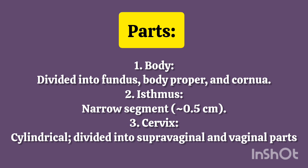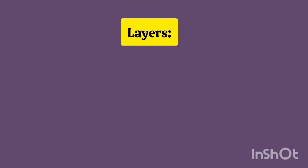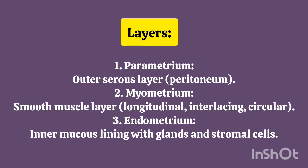Parts: 1. Body – divided into fundus, body proper, and cornua. 2. Isthmus – Narrow Segment – 0.5 cm. 3. Cervix – Cylindrical – Divided into Supravaginal and Vaginal Parts.